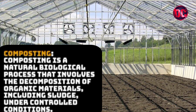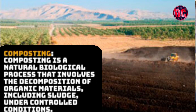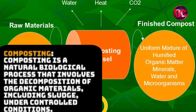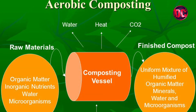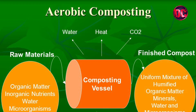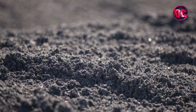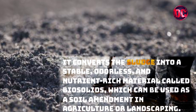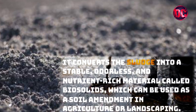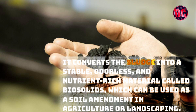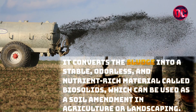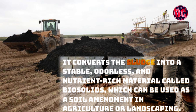Composting is a natural biological process that involves the decomposition of organic materials, including sludge, under controlled conditions. It converts the sludge into a stable, odorless and nutrient-rich material called biosolids, which can be used as a soil amendment in agriculture or landscaping.